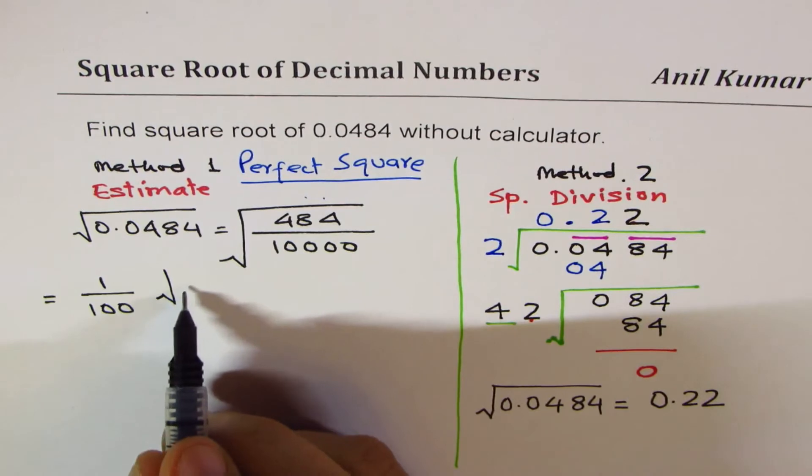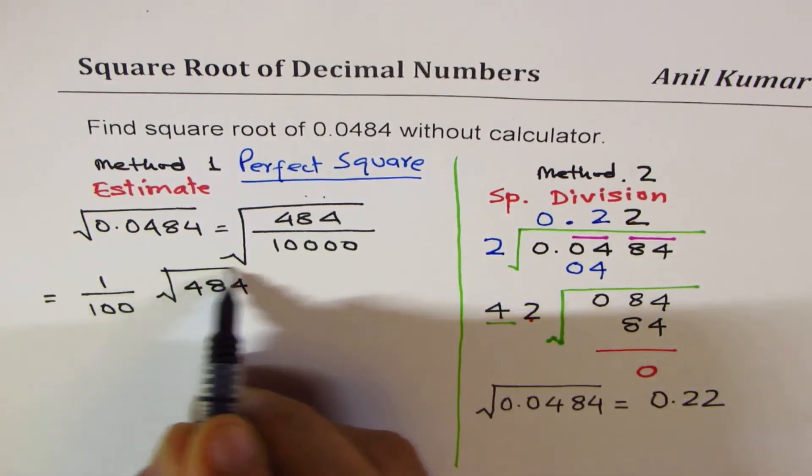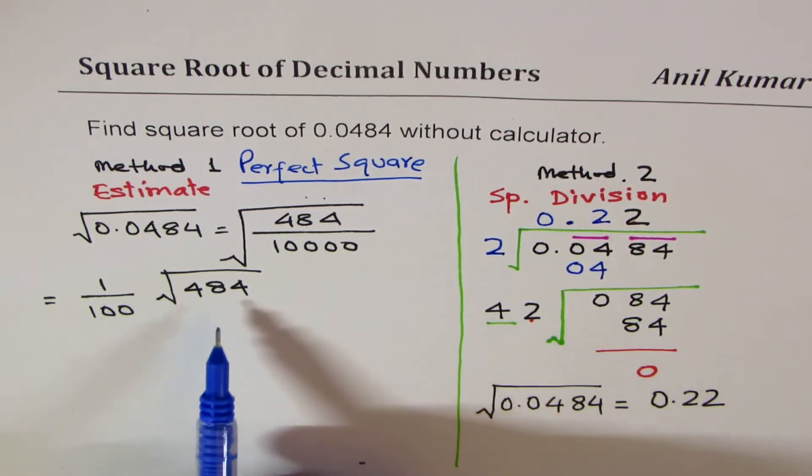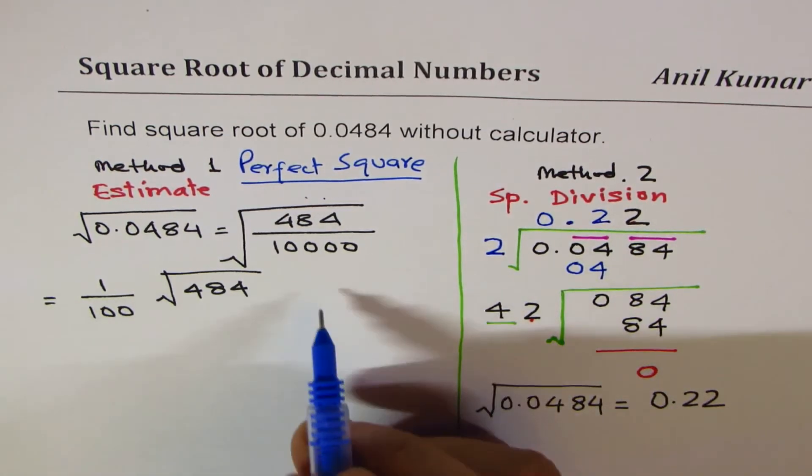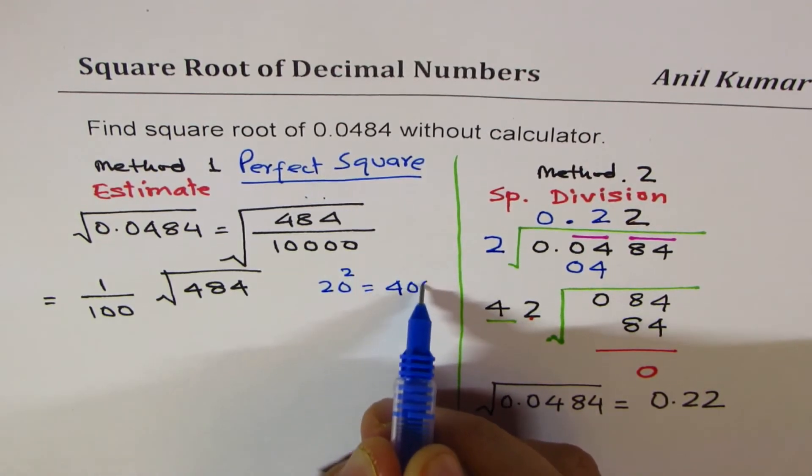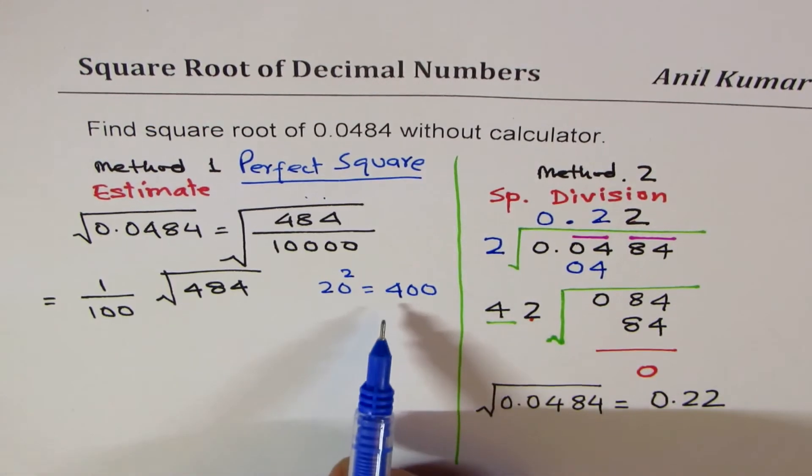We need to find square root of 484. You can do an estimate. We know square root of 400 is 20. Square root of 484 is more than 20.